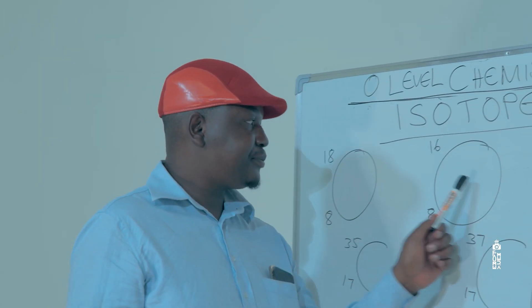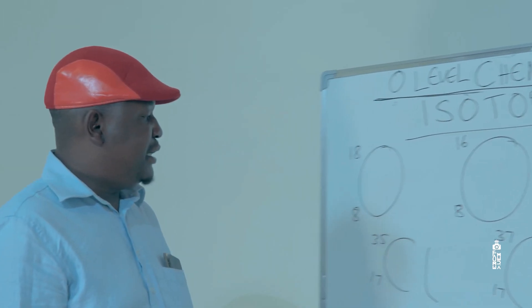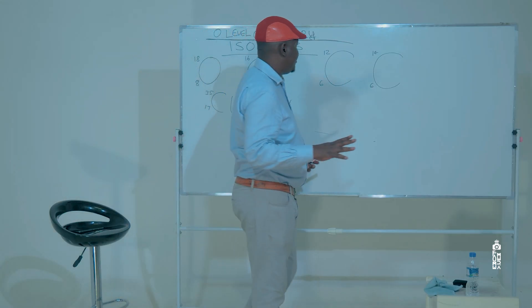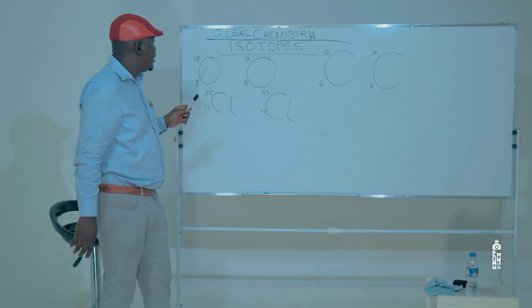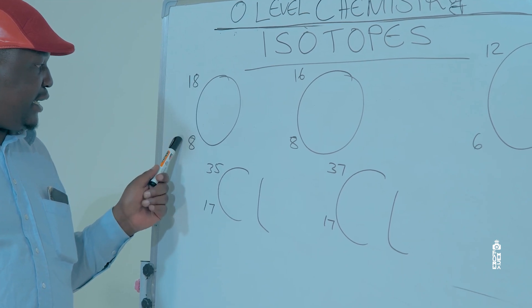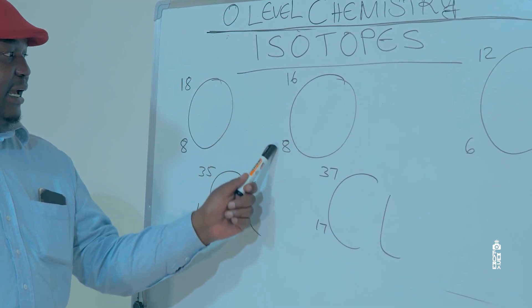I have written three nucleic notations for three different elements, and I'm going to start with oxygen. As you can see, oxygen, we've got 18,8, and oxygen, 16,8.